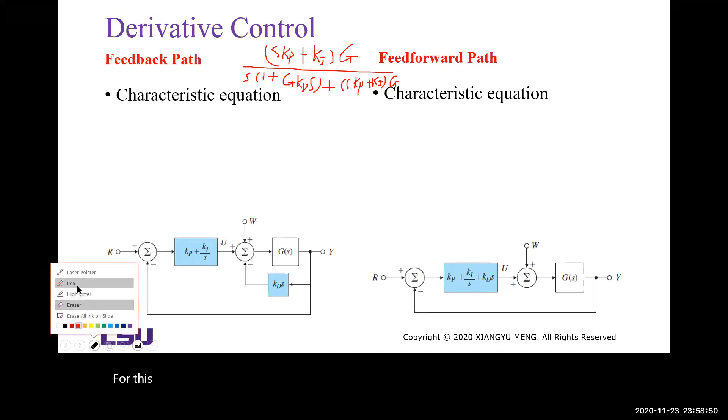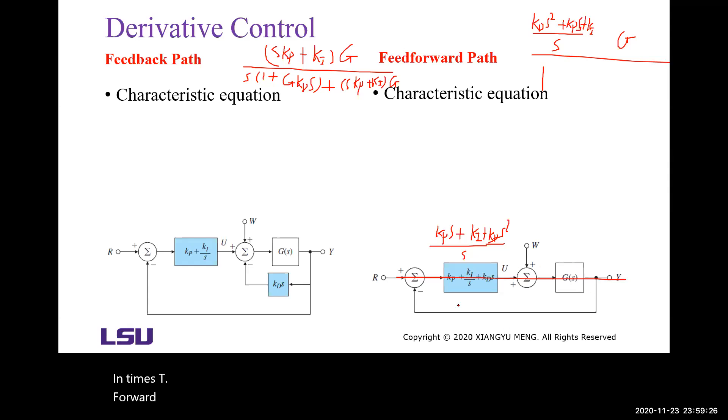For this structure, we have S Kp plus KI plus KD S squared. The transfer function will be KD S squared plus Kp S plus KI times G, divided by S plus G KD S times KD S squared plus Kp S plus KI times G.